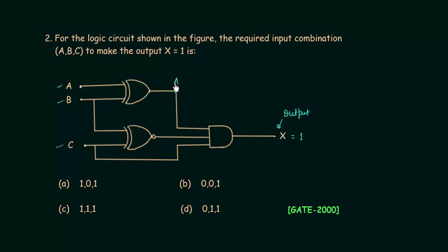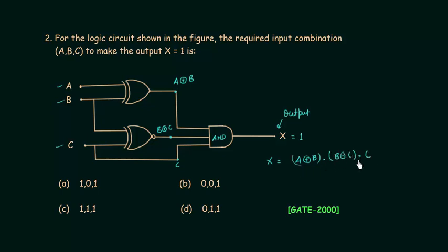The output of the first gate is A XOR B, the output of the second gate is B XNOR C, and C is also a direct input. These three are given to an AND gate, so X equals (A XOR B) AND (B XNOR C) AND C. For the output to be high, A XOR B must be one, B XNOR C must be one, and C must be one.